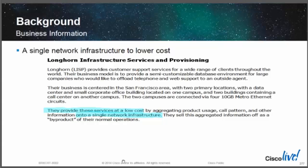In this case, you have LISP — these guys provide customer support services, basically a call center. The original idea is you'd have a call center with a set of agents who sit there and answer the phone for various companies. They're in the San Francisco area with a couple of locations, and they're basically trying to offer customer support at a lower cost than companies can build their own call centers by combining them all onto a single network infrastructure.